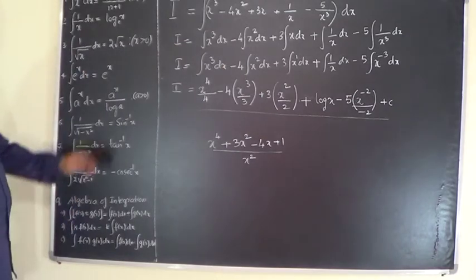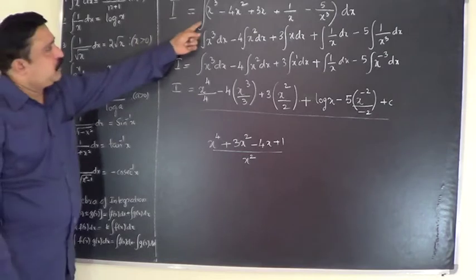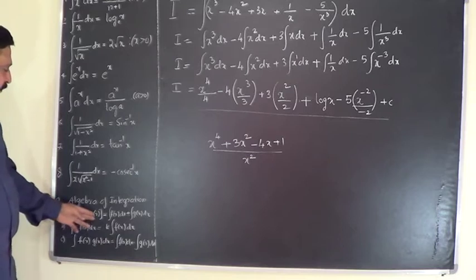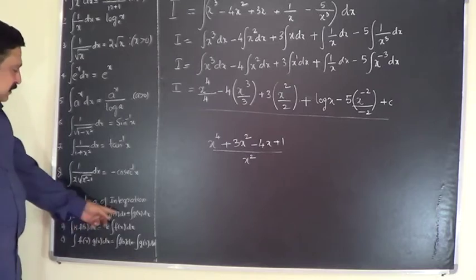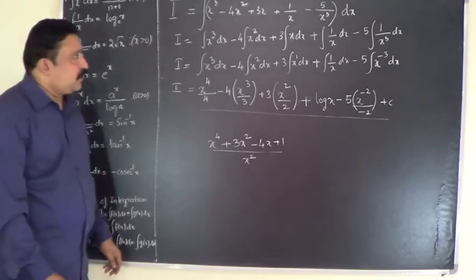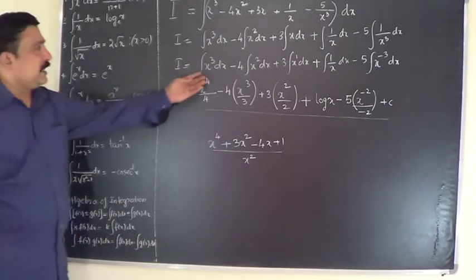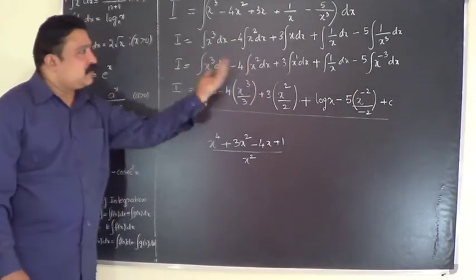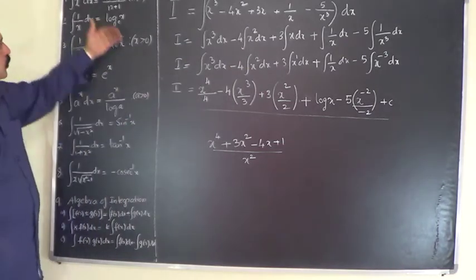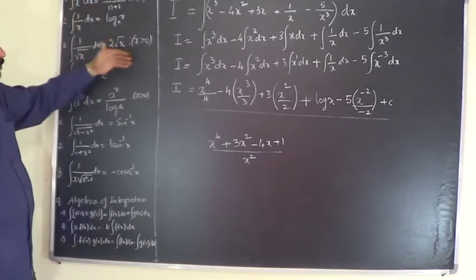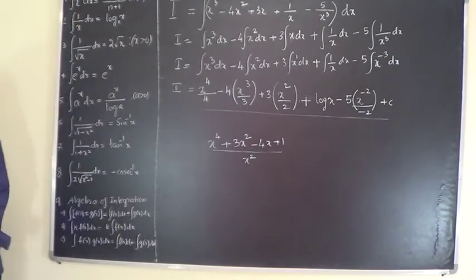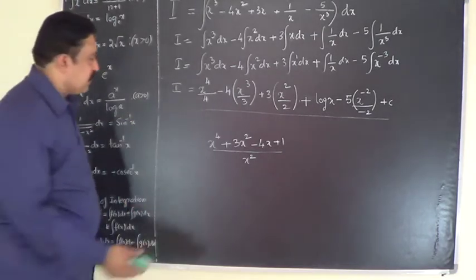So what we did in this problem: we used the property of the algebra of integration — that the integral of f(x) plus r minus g(x) equals integral f(x) dx plus r minus integral g(x) dx. Any constant present inside the integral sign should be taken outside, and use whichever relevant formula is applicable for each term.